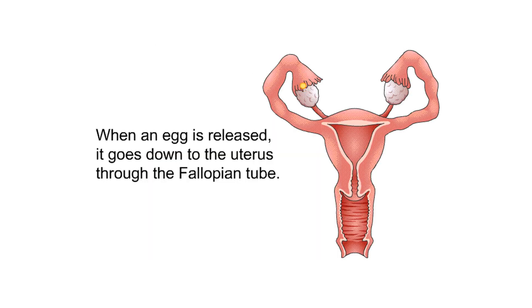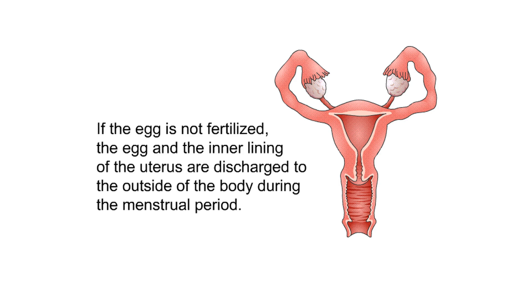When an egg is released, it goes down to the uterus through the fallopian tube. If the egg is not fertilized, the egg and the inner lining of the uterus are discharged to the outside of the body during the menstrual period.